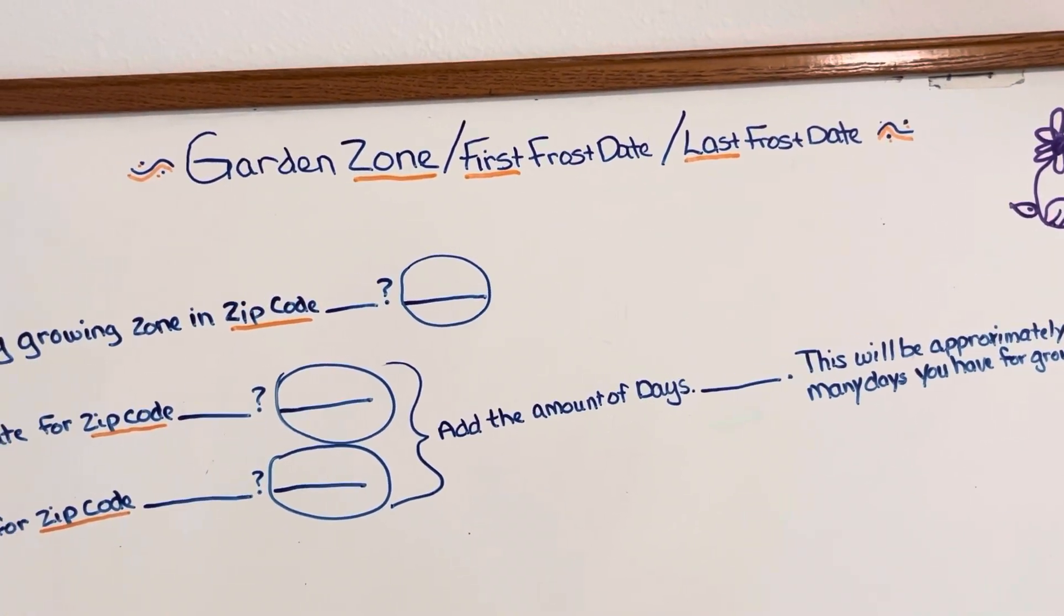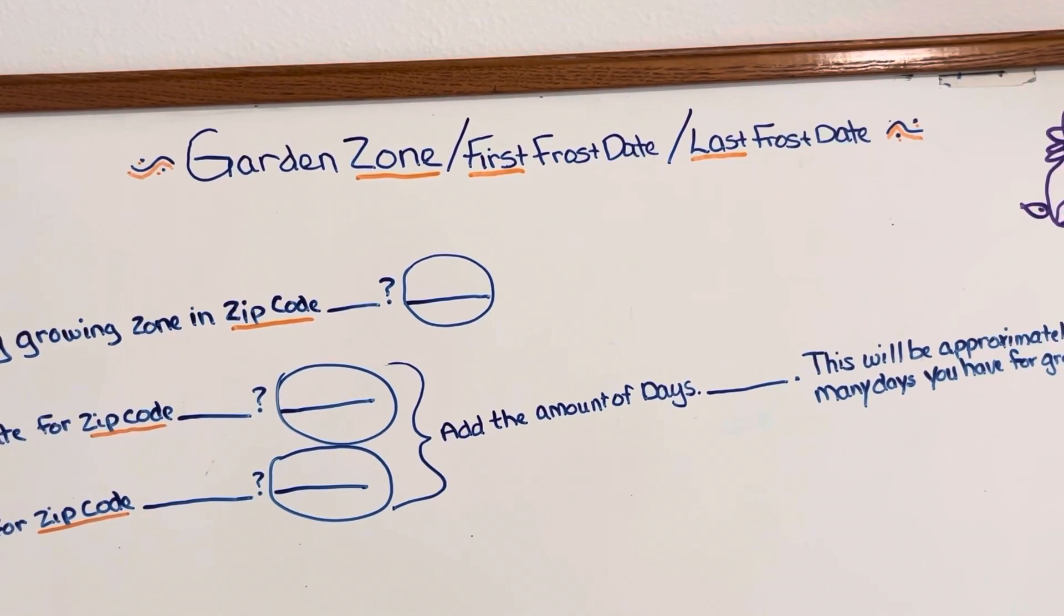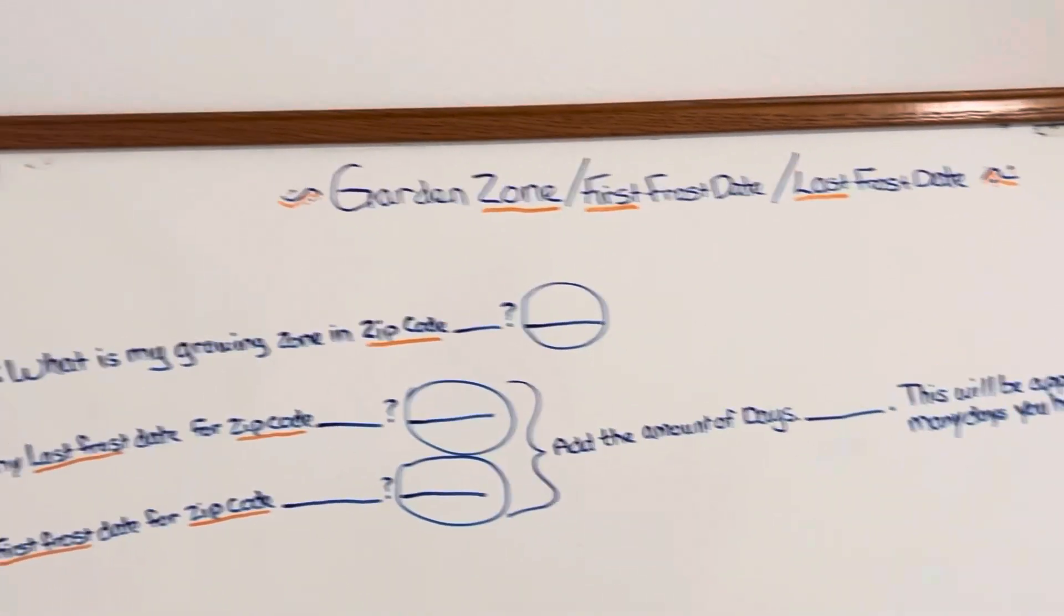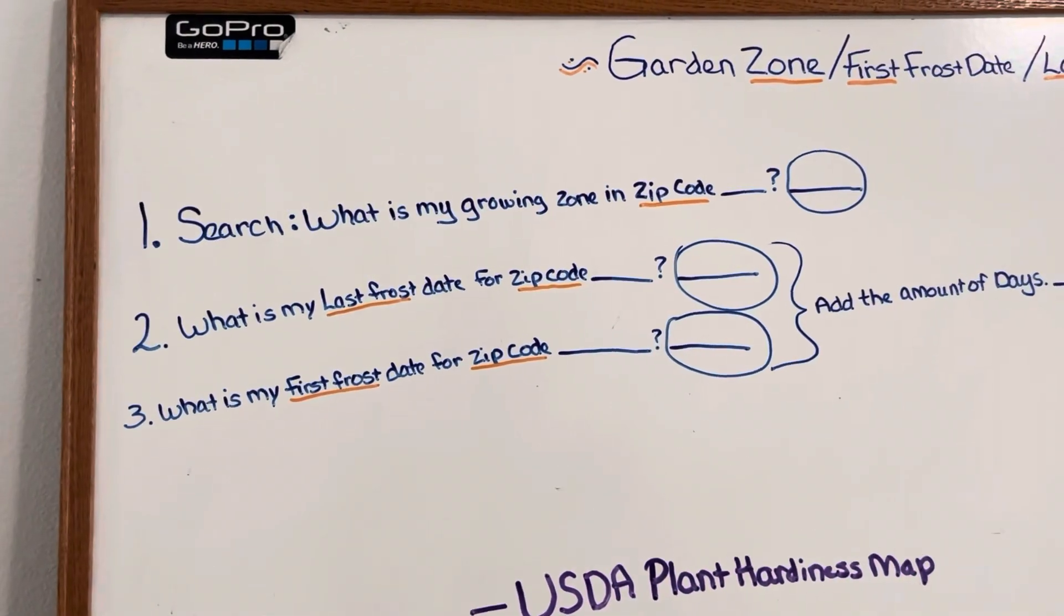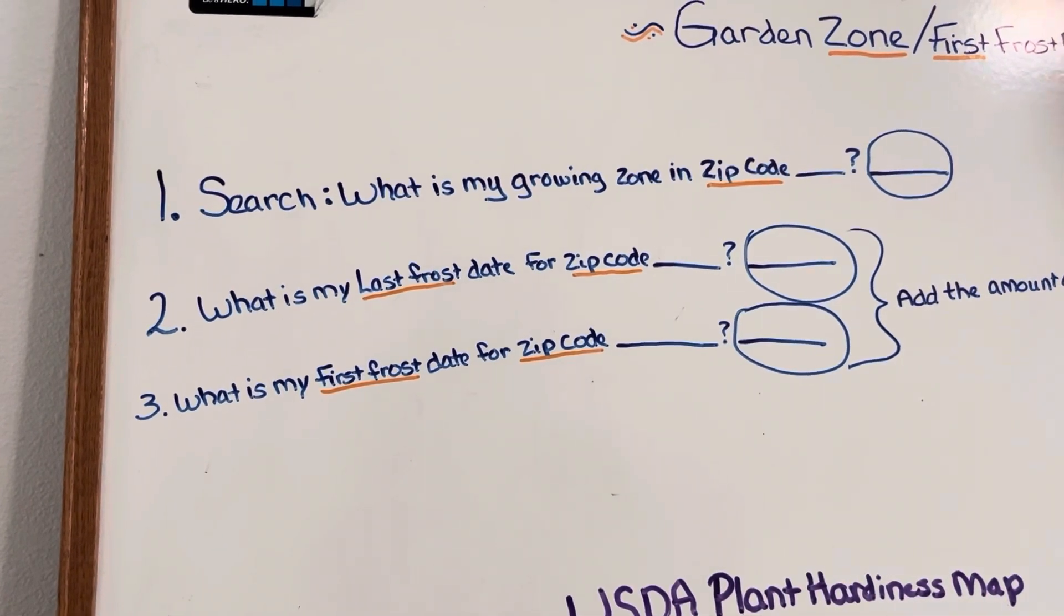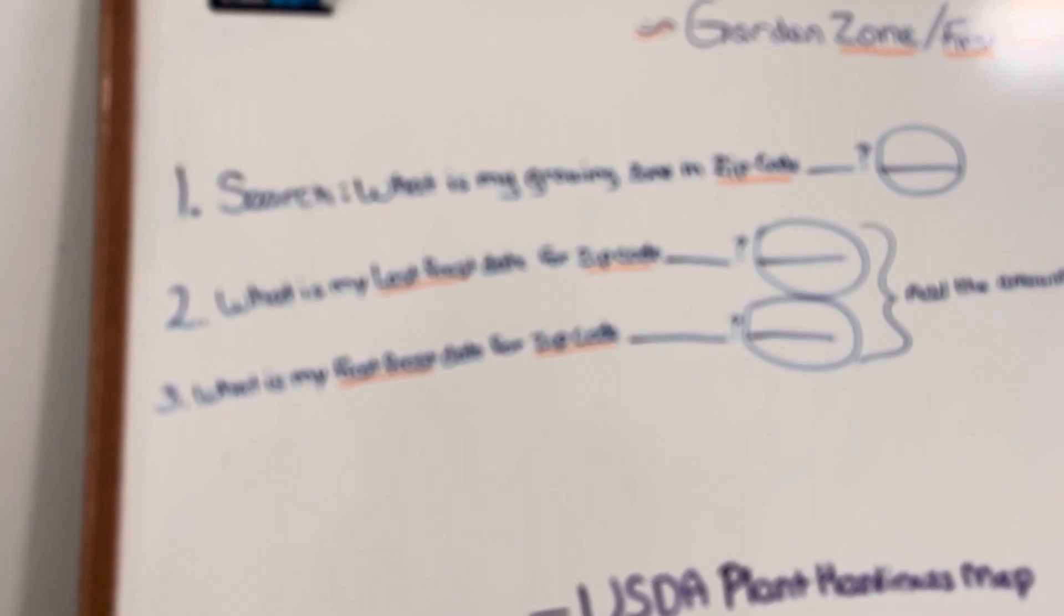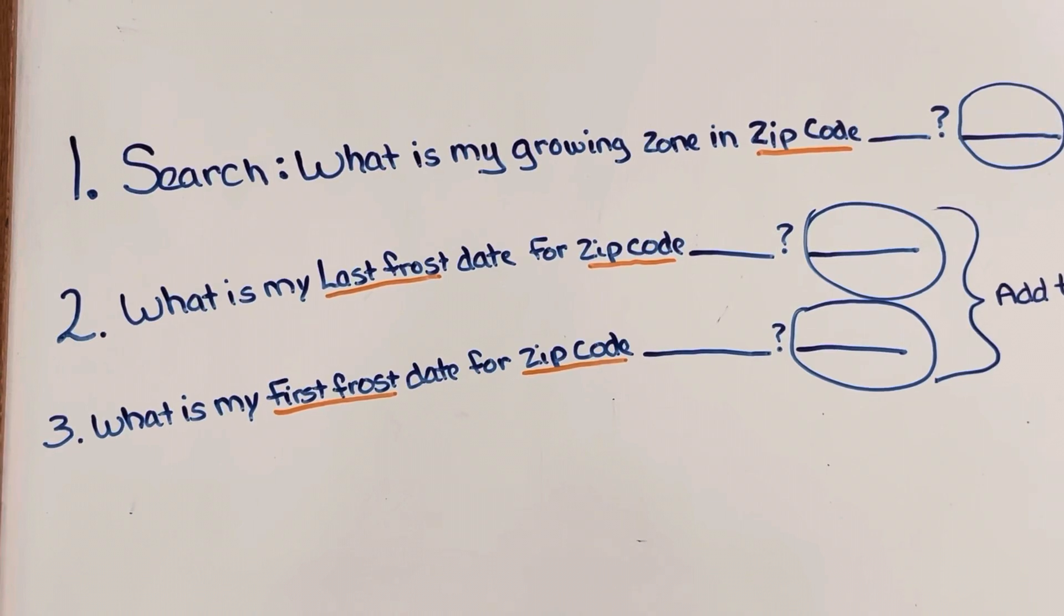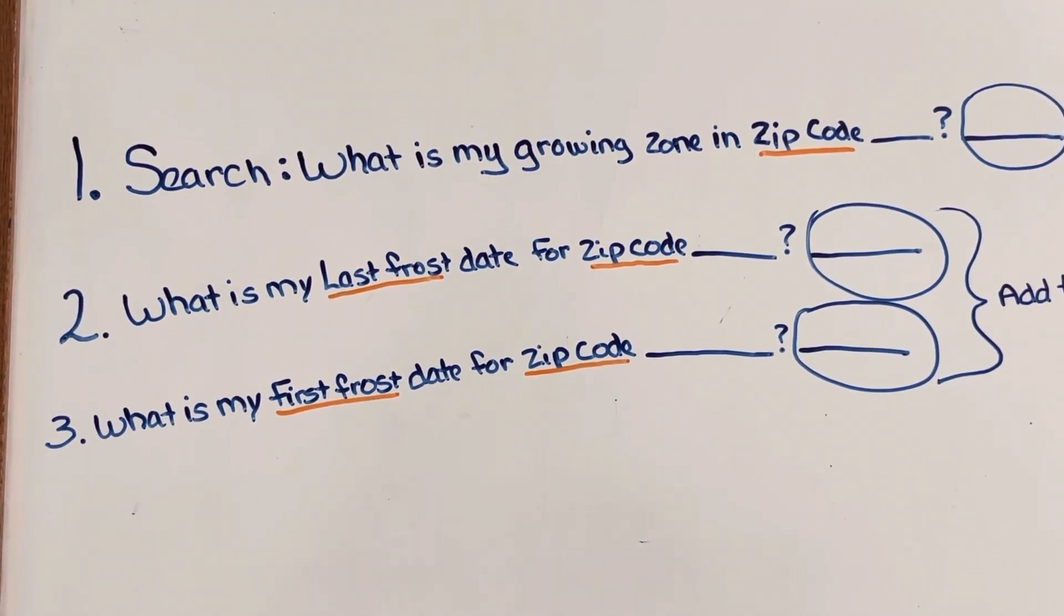Okay so what we're going to do is we're going to learn about the garden zone, the zone that you live in, the first frost date and the last frost date. The first thing that you're gonna want to do, let me get all situated. I hope that you can read my writing, I am not used to writing on boards. All right, the first thing you're going to want to do is use a search engine, Google or whatever it is that you use, and you're gonna want to search what is my growing zone and zip code.